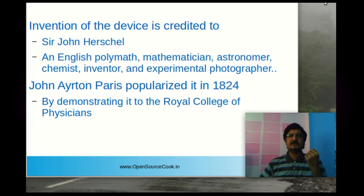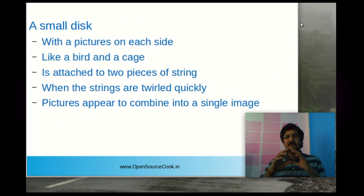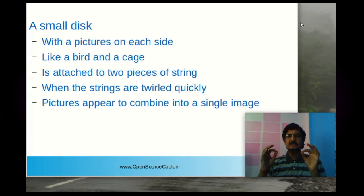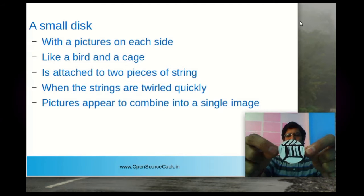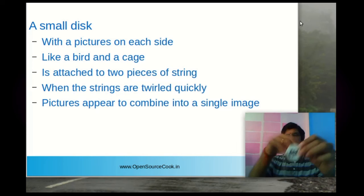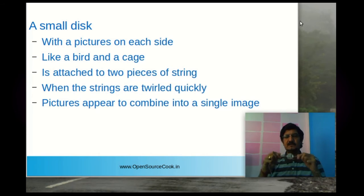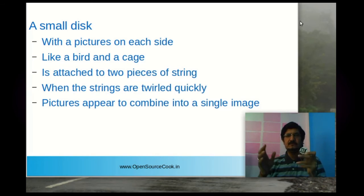So what exactly is this device? The thaumatrope is basically a small disk with pictures on two sides. You could have a bird and a cage, and it is attached to two pieces of string so you can twirl it around. Here I've made one — on one side there's a cage and on the other side there's a cat.